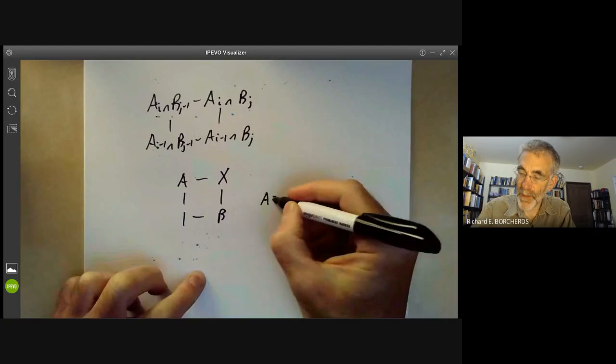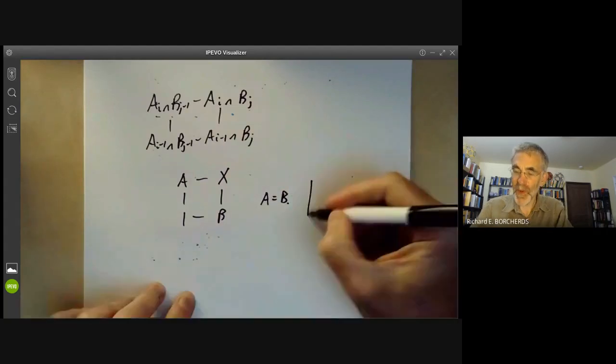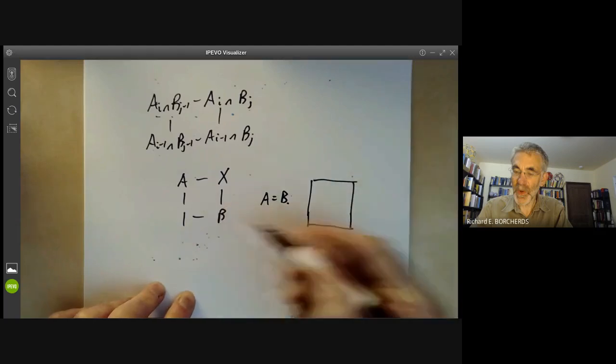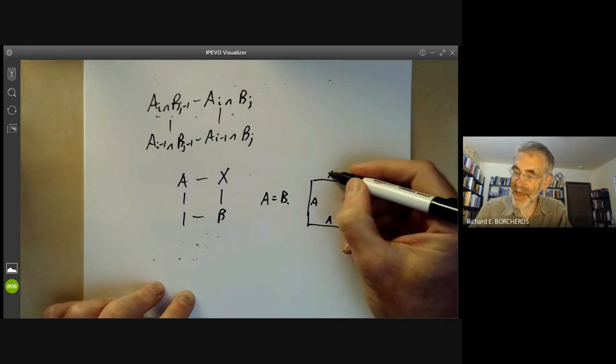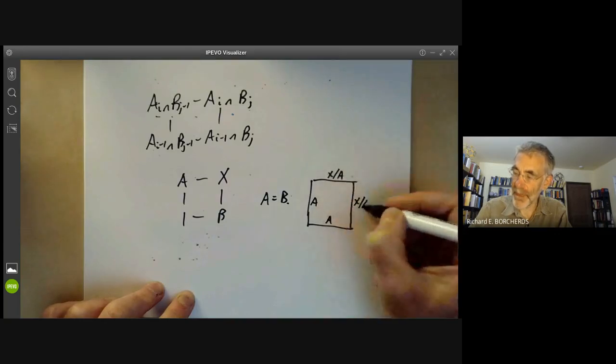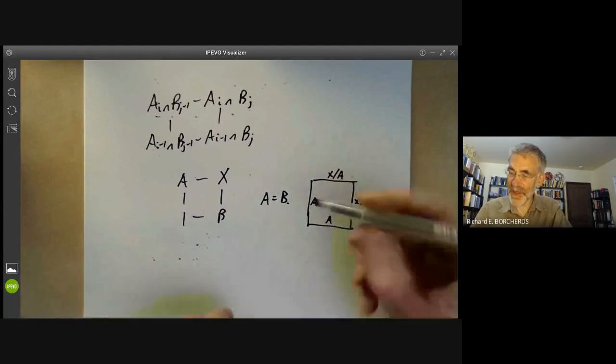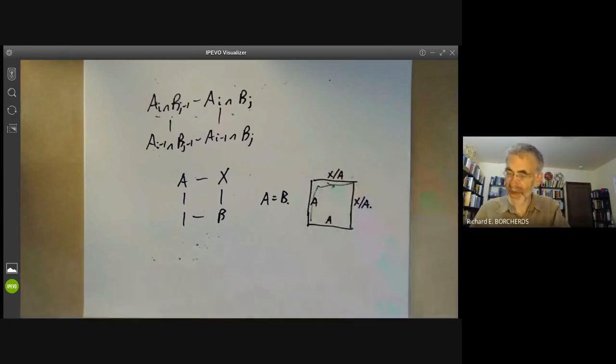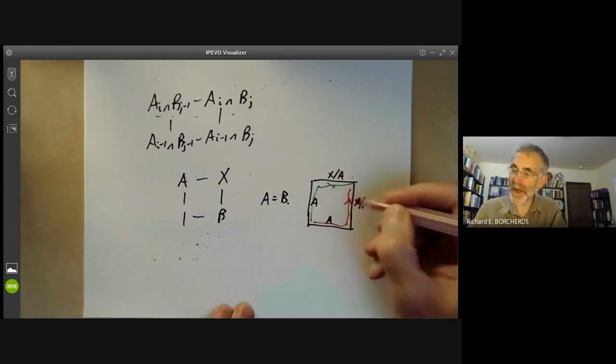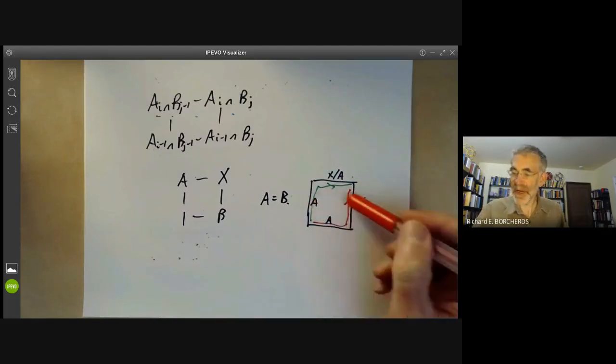Well, the quotients here are just A and the quotients here are just X over A. So what happens if we go by these two different routes? Well, if we go this way, we get X and X over A. And if we go this way, we again get A and X over A. So the factors we get don't change. What happens if A is not equal to B?